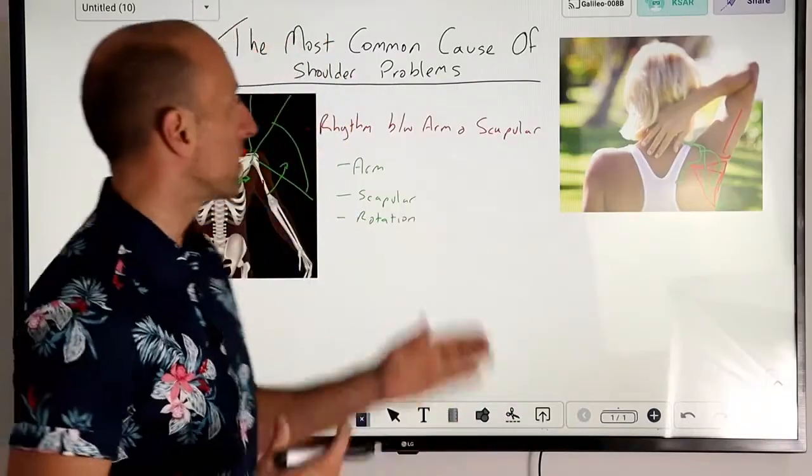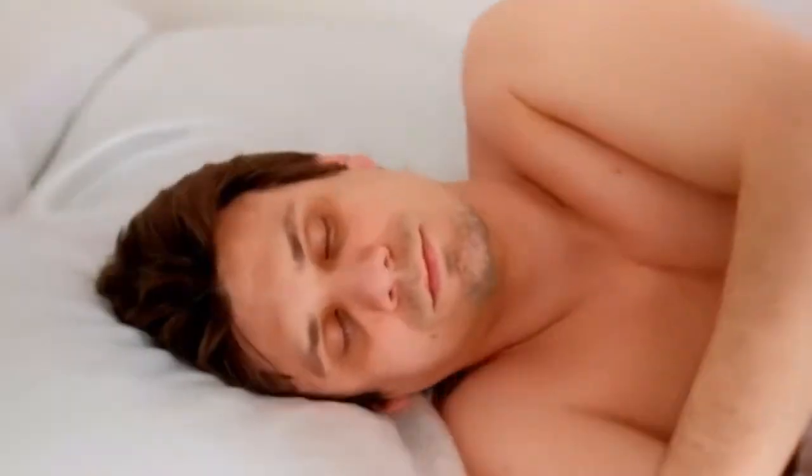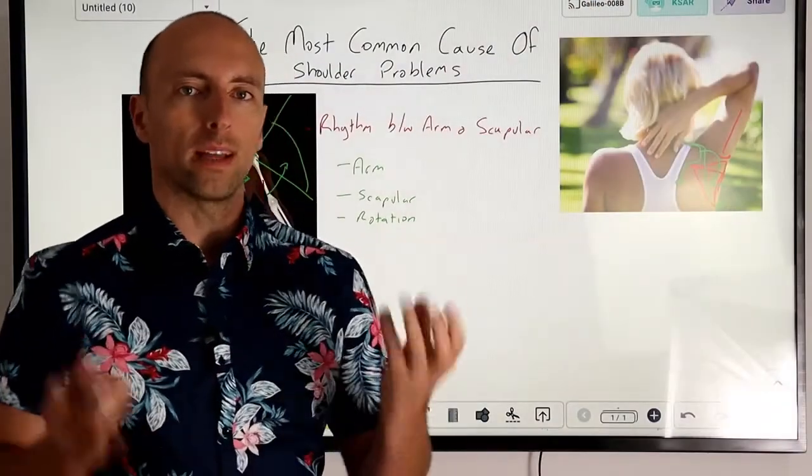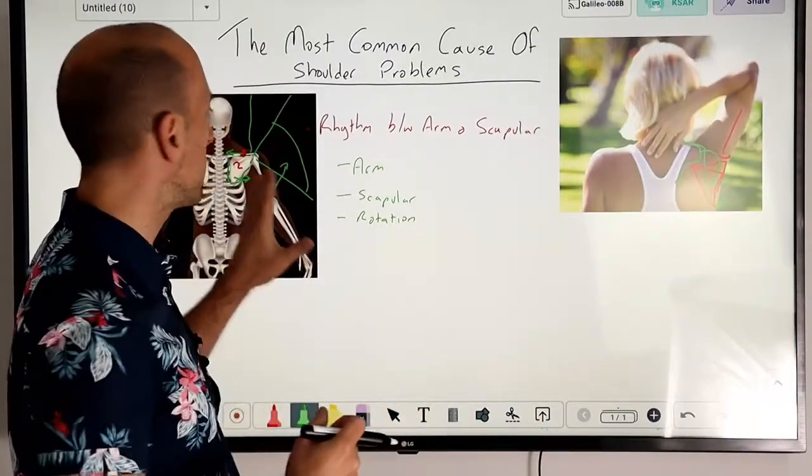The other key one that we see as well with this is when people are laying on their side and the shoulder starts to hurt, or if they're waking up in the morning or even during the night and their hands are going numb or weak. These can be other signs that we're having instability with this as well.